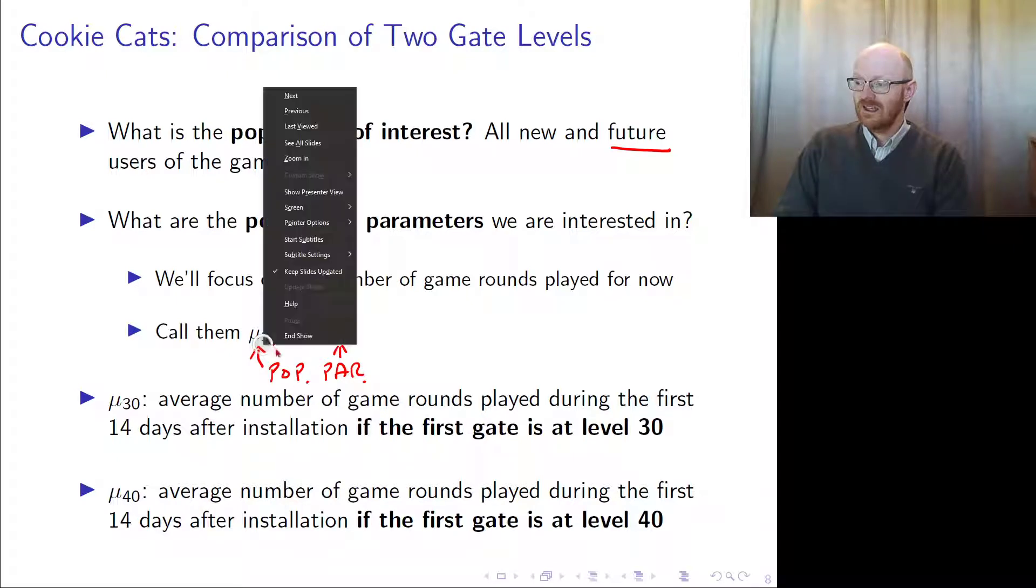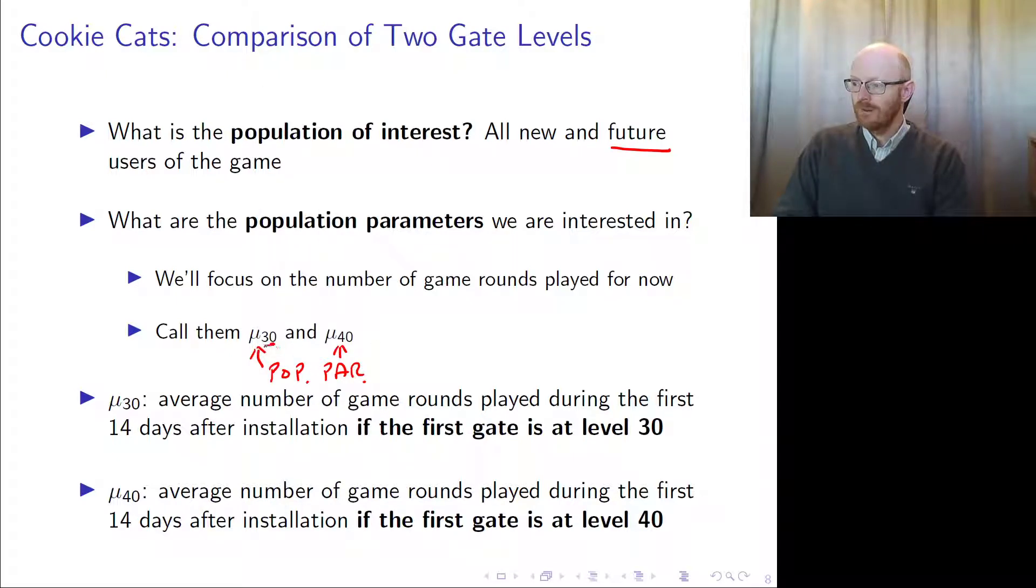Gate set at 30 and gate set at 40. We have two populations and we would like to know if there is a difference between these. Mu is an average, the population average, but we can't observe these.